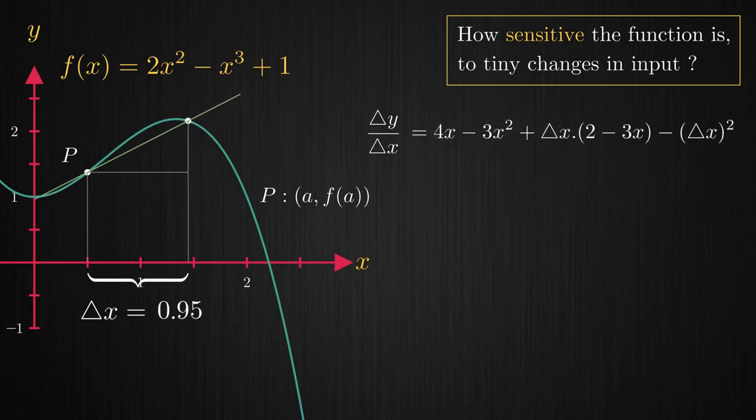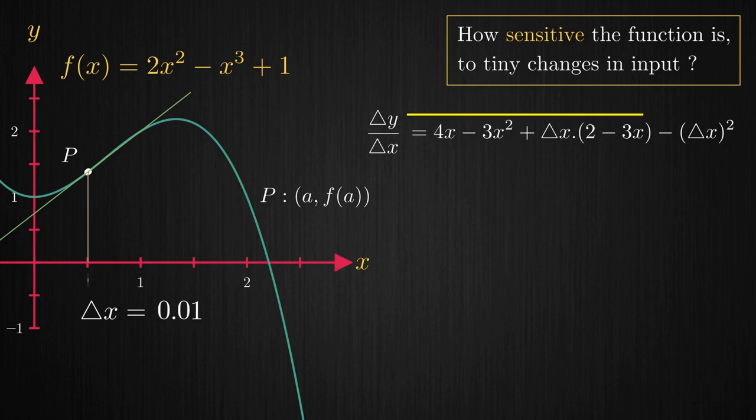As Δx approaches 0, this rise over run slope approaches the slope of tangent to the curve at the point P. Also, any term in the expression for slope that is a multiple of Δx can be dropped off as they too approach 0.